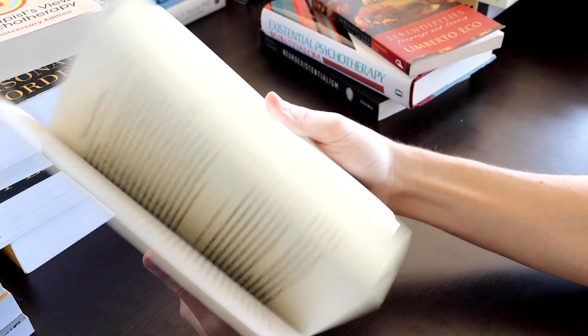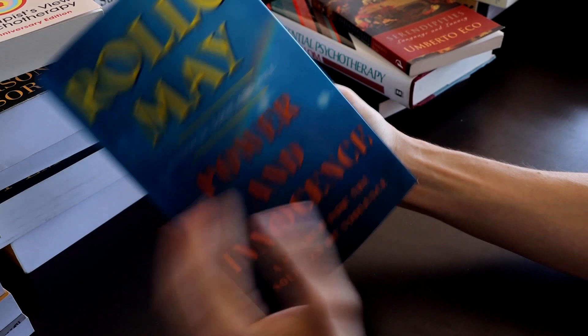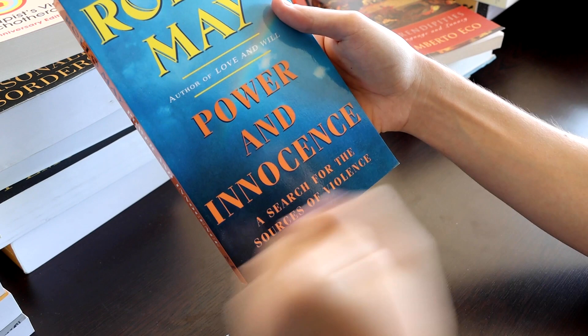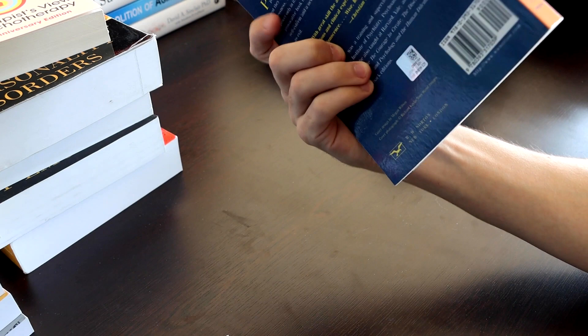Rollo May again, Power and Innocence. This is one of his older works, I think. And I believe it's just about the relationship between power and innocence. It's a book about violence, a search for the sources of violence. And I believe it's going to be looking at violence through the relationships of power and innocence, if I'm not mistaken.